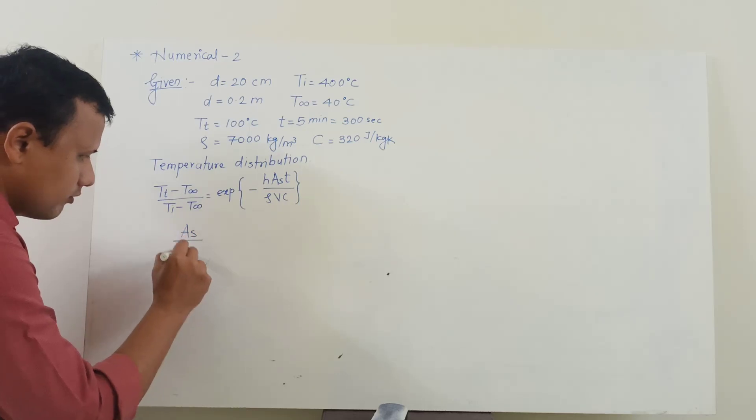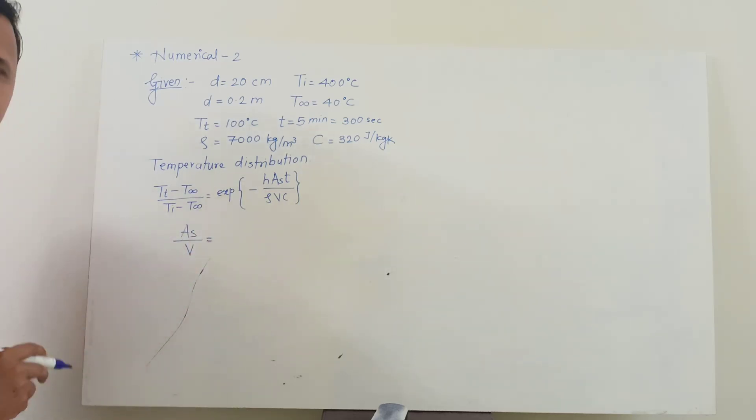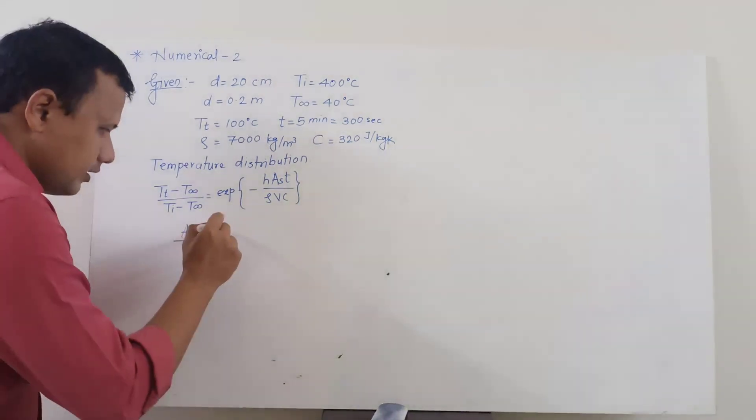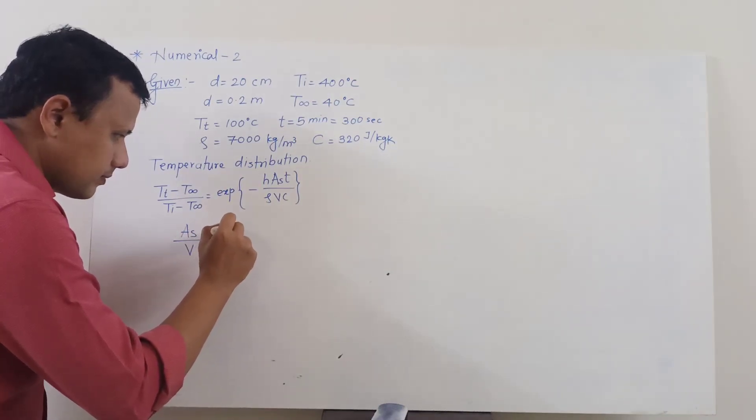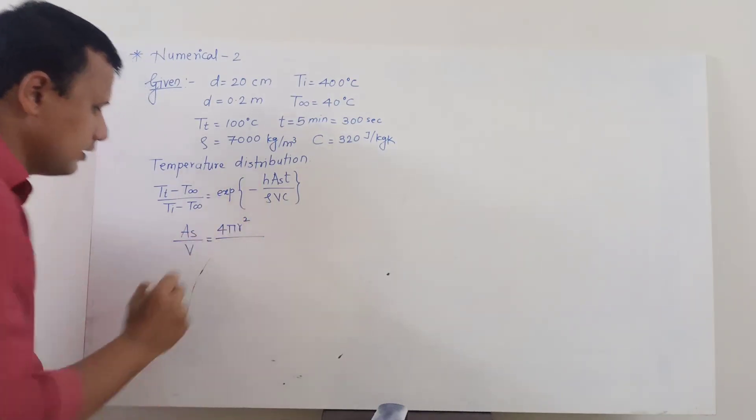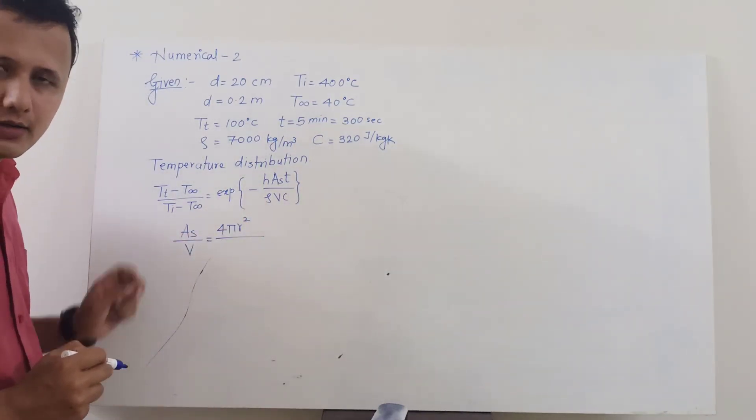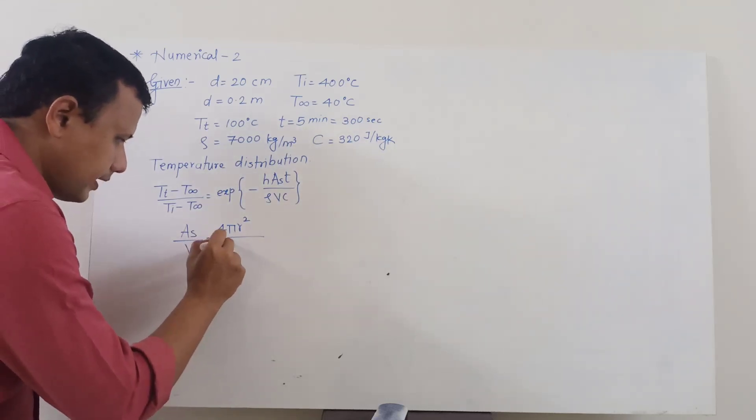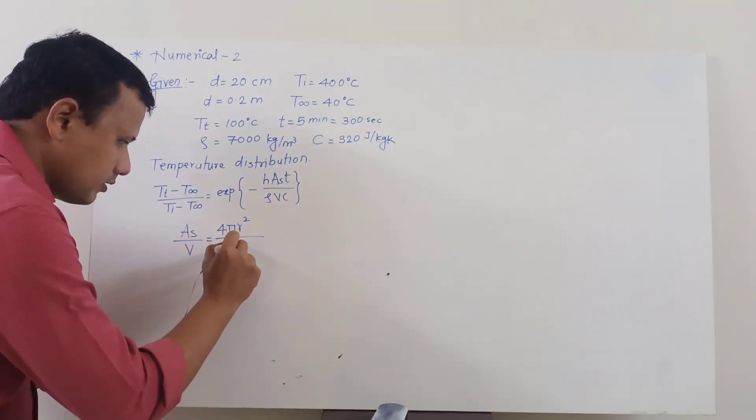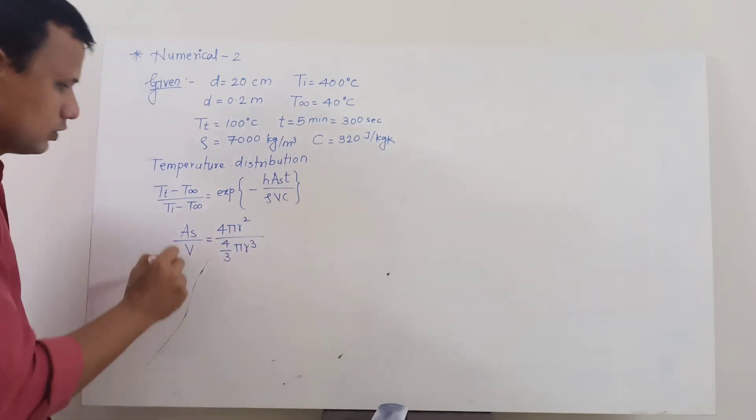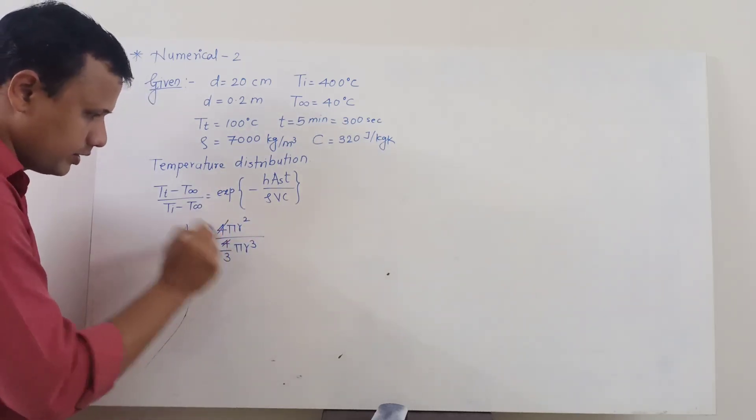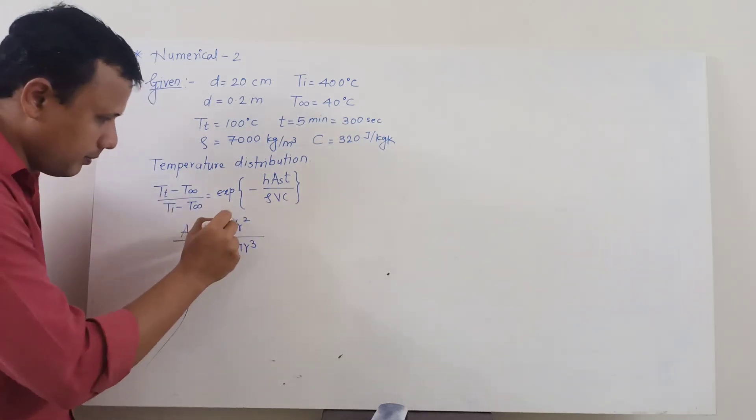So this A_s upon V, the surface area for this spherical ball will be 4π R square and the volume for this spherical ball will be 4/3 π R cube. So 4 from numerator and 4 from the denominator will be absorbed, π will be absorbed from the numerator and the denominator.